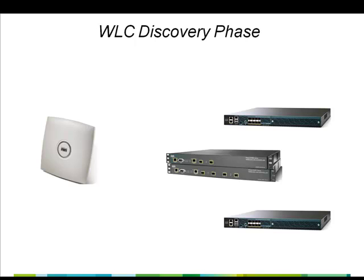Our lightweight access point has received an IP address from the DHCP server. Next, it needs to find controllers to which it can register. For this, the access point uses the wireless LAN controller hunting algorithm. Let us now see how the wireless LAN controller hunting algorithm works.